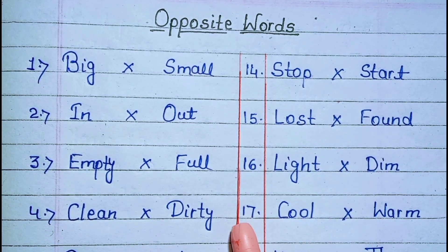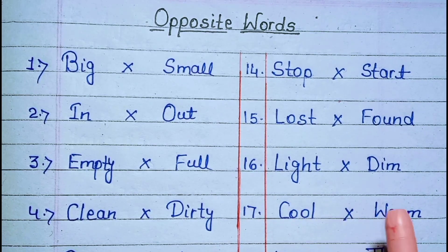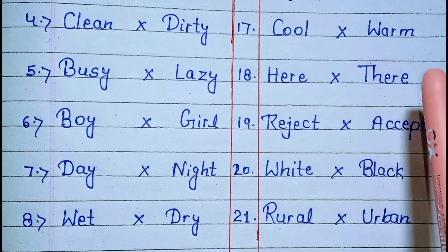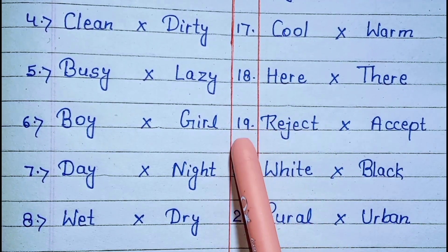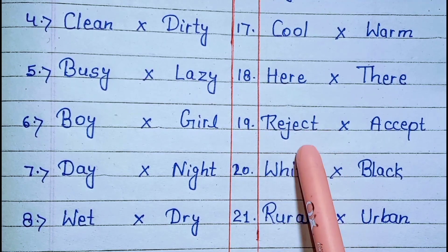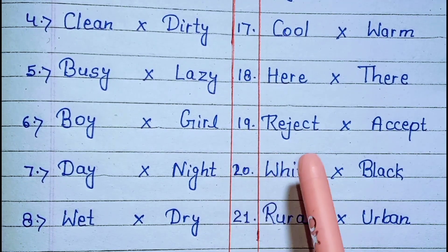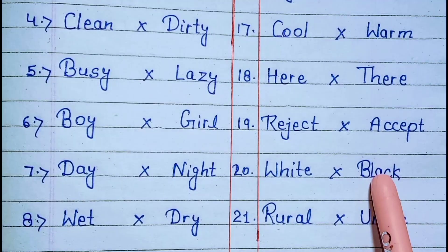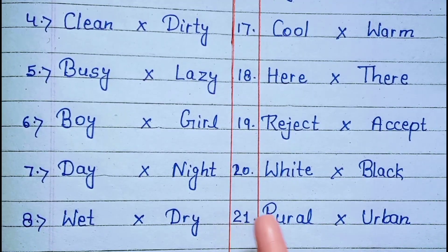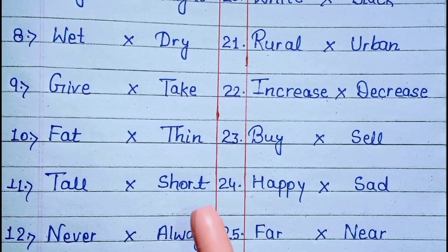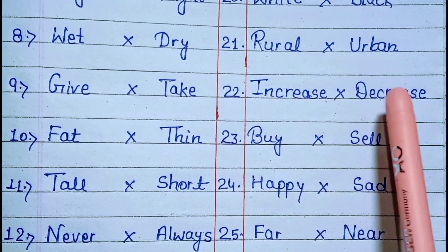17. Cool, warm. 18. Here, there. 19. Reject, accept. 20. White, black. 21. Rural, urban. 22. Increase, decrease.